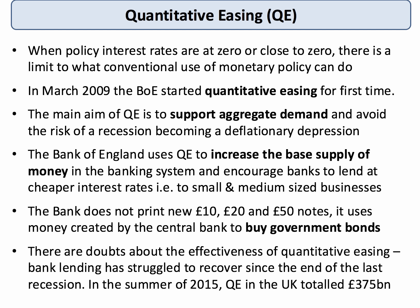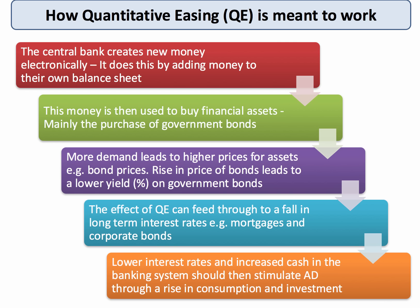The key point is that the bank does not print new money. It just creates money electronically — it expands its own balance sheet to buy government bonds. The central bank decides to create new money through QE by adding money to their own balance sheet. This money created electronically is then used by the Bank of England to go into financial markets to buy financial assets, and up to 2016 the biggest single item has been buying existing government bonds from the commercial banking system.